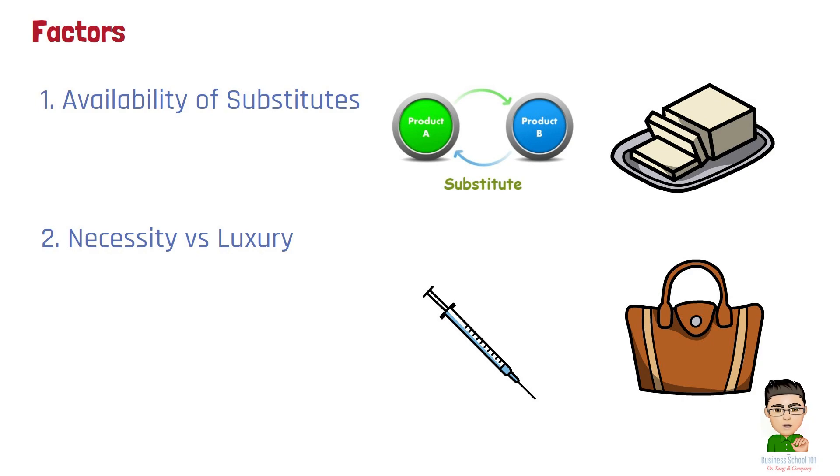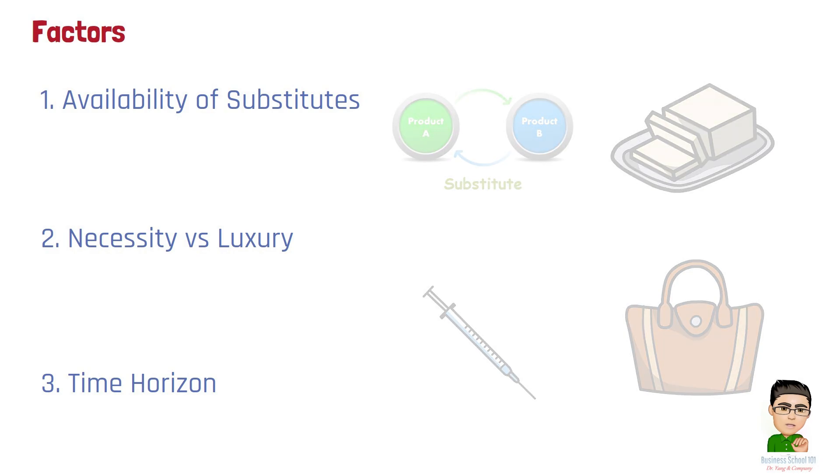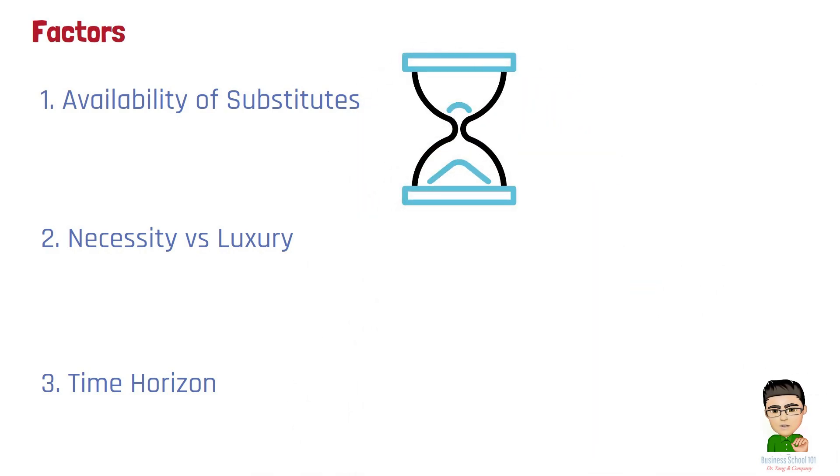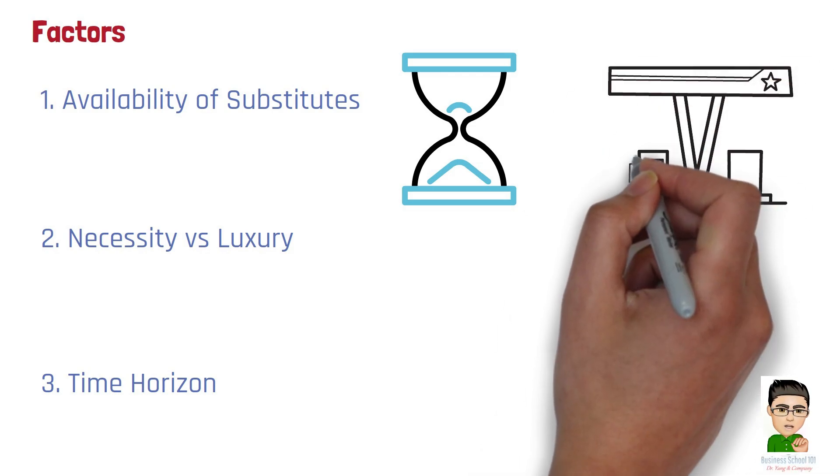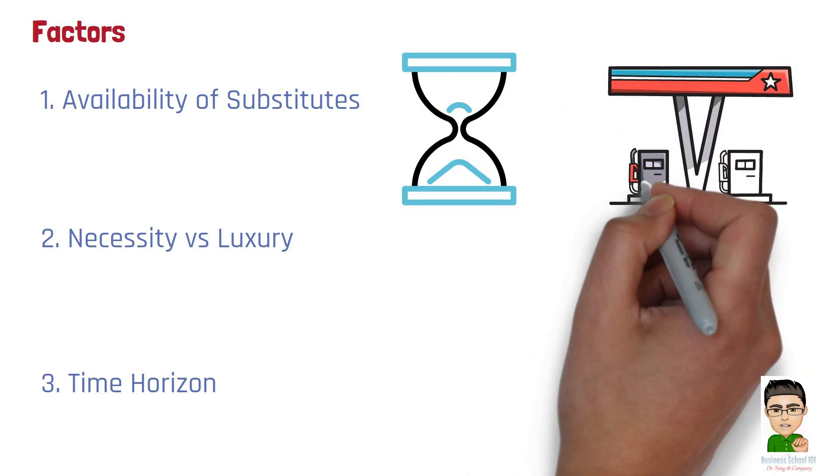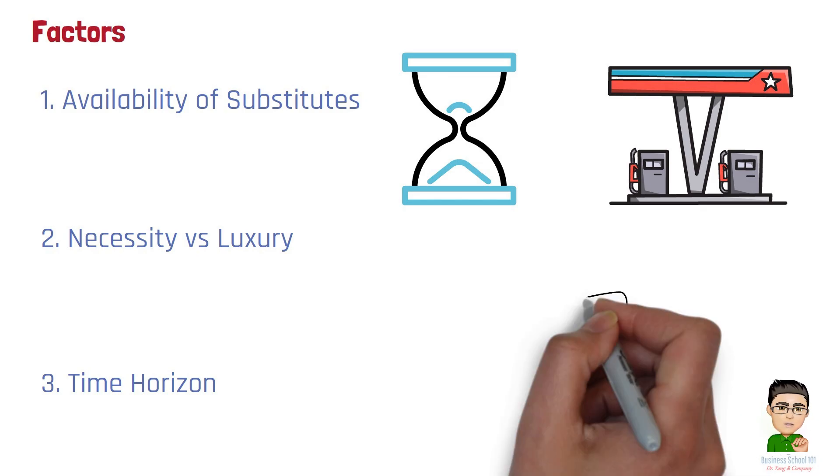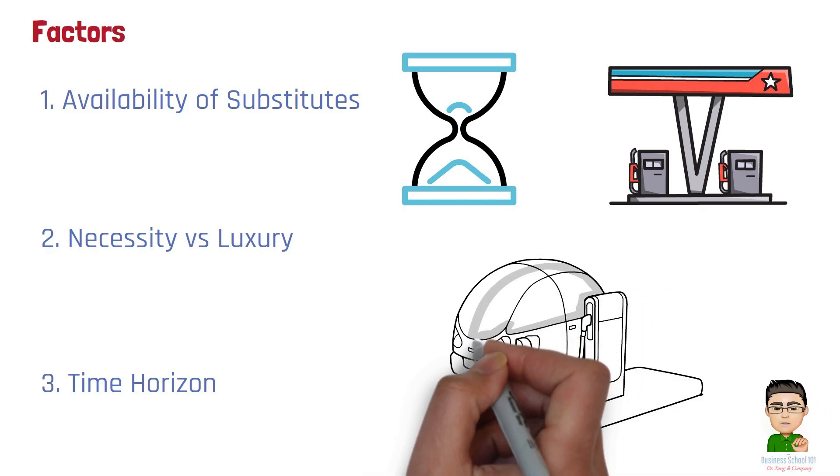Number 3: Time horizon. Demand is usually more elastic over the long run than the short run because consumers have more time to find alternatives. For example, if the price of gasoline rises, people might continue to buy it in the short term because they need to drive. But over time, they might buy more fuel-efficient cars or use public transportation, making demand more elastic in the long run.